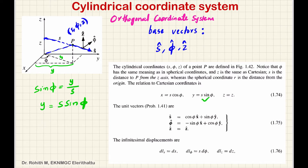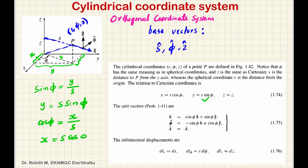Now, for the x coordinate: x is the adjacent side. cos(phi) equals adjacent side by hypotenuse, so cos(phi) equals x coordinate divided by s. Therefore, x equals s·cos(phi). So x is equal to s·cos(phi).